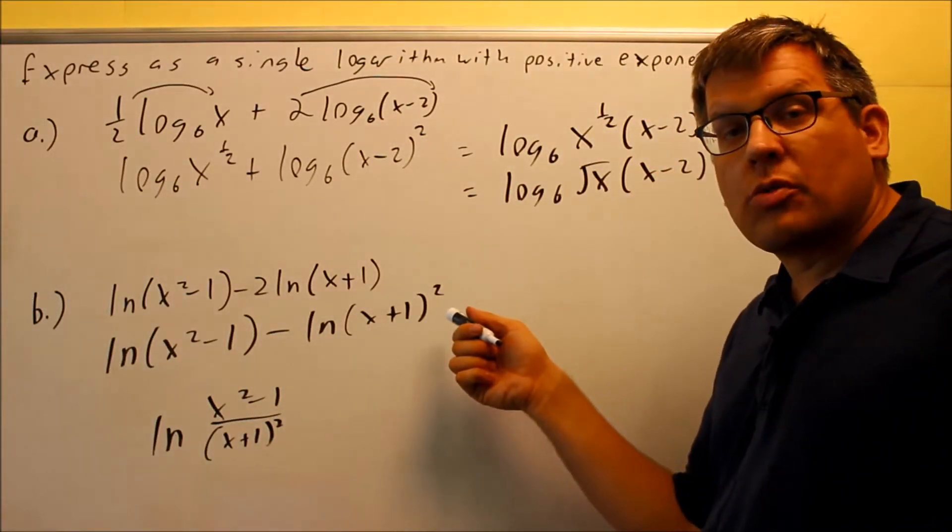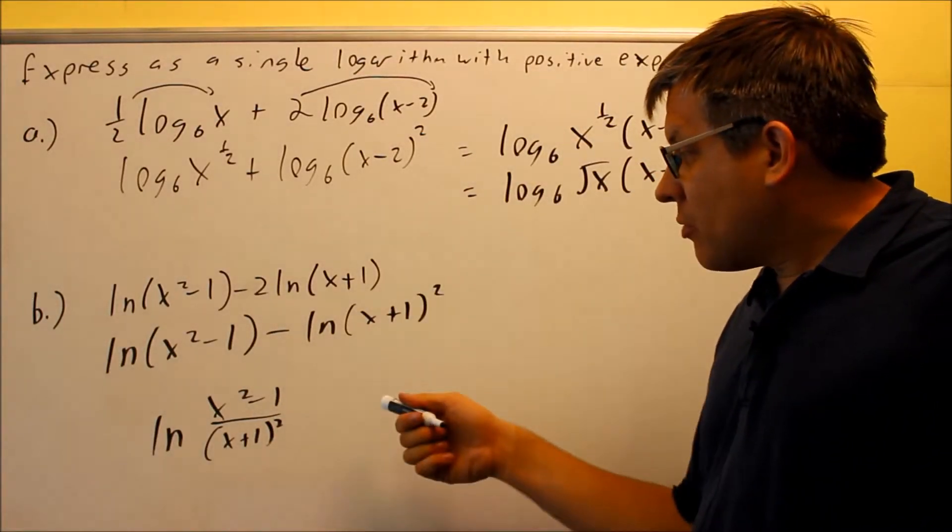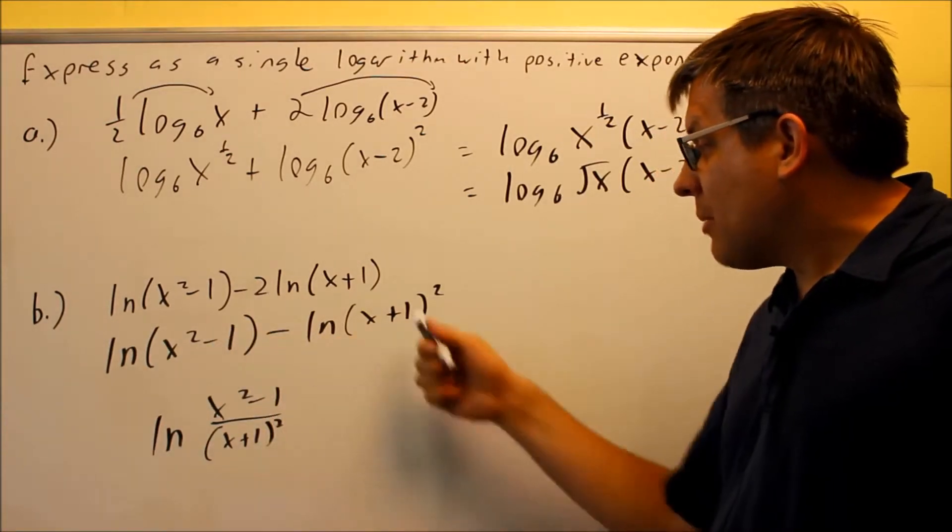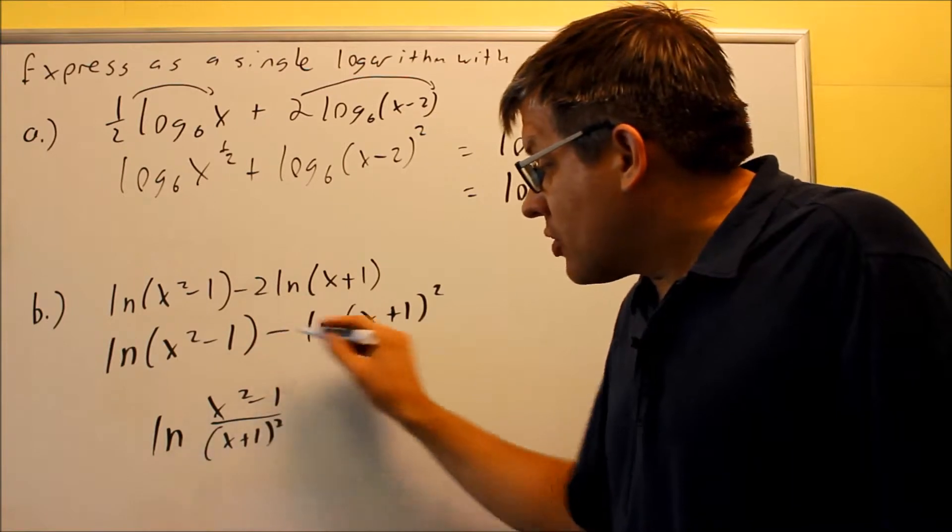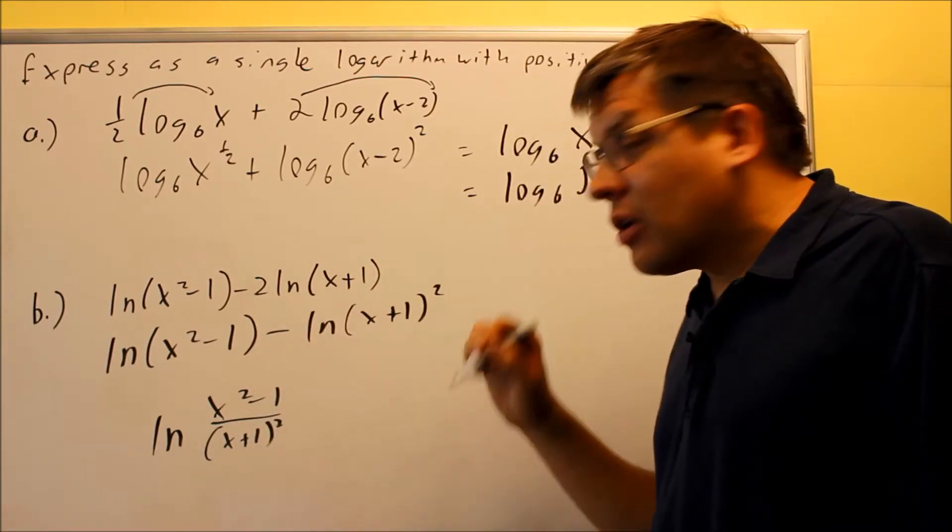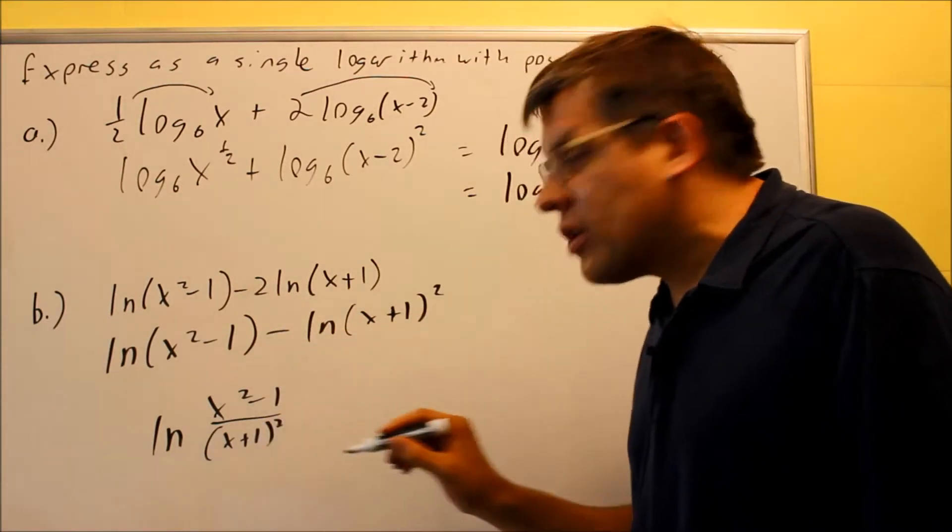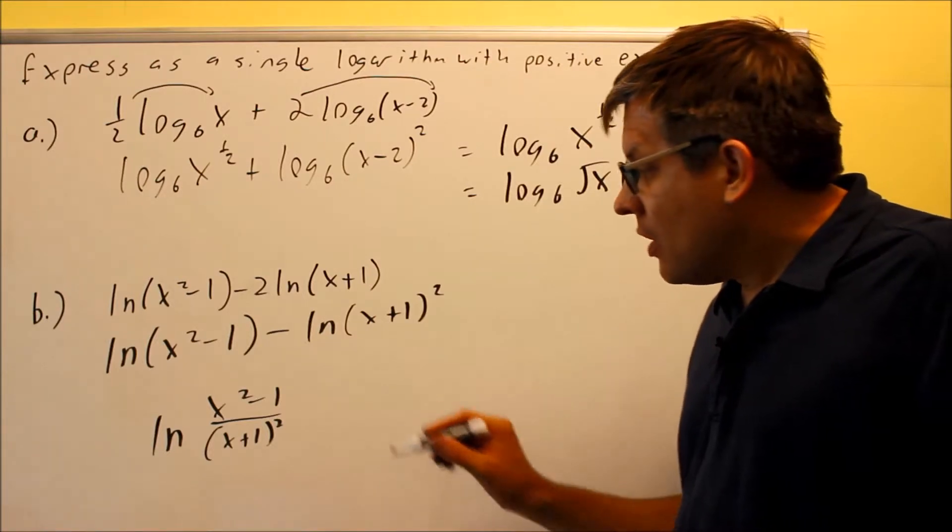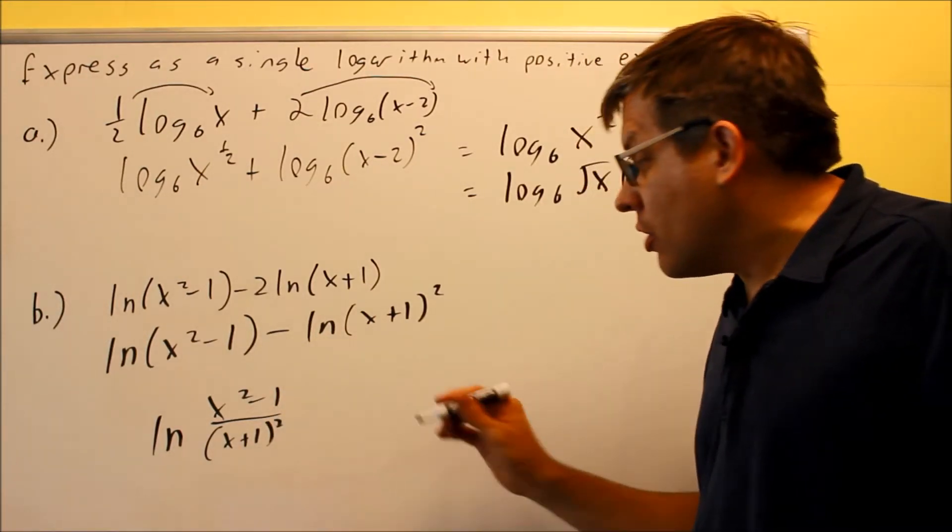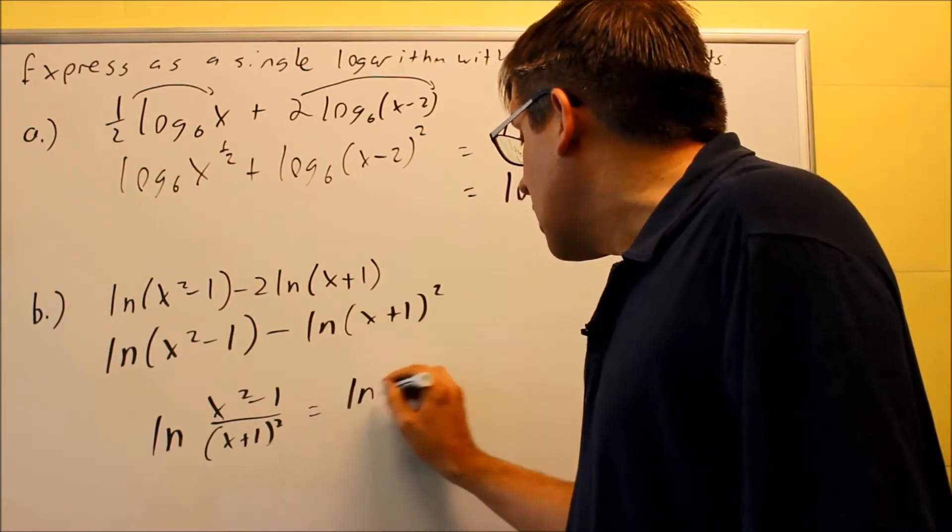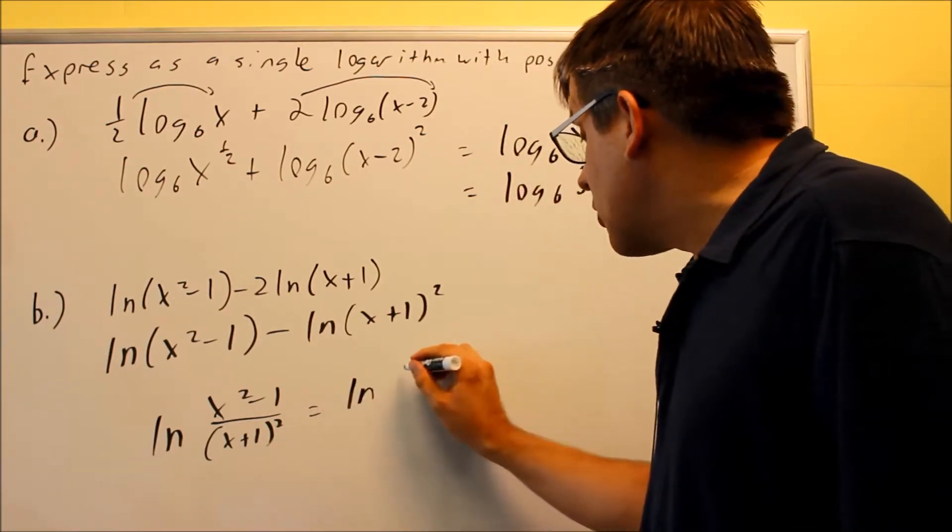So again, that's using rule number 7, whenever you have something like this, the first one always goes on top, the second one will go on the bottom. Now a lot of times, there may be problems where you can simplify more. So this isn't quite simplified far enough yet. What I need to do is do some factoring. So if it looks like you can do factoring, you do want to go ahead and do that, because sometimes you may be able to make the answer even simpler.